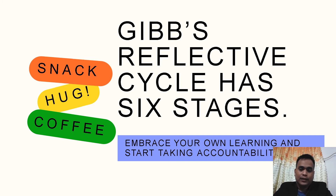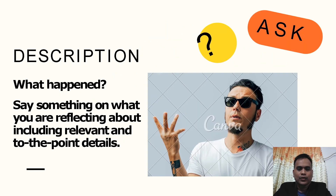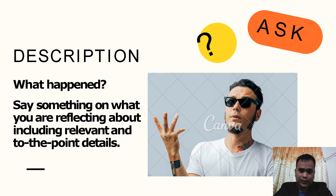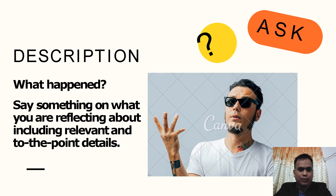You may take your coffee, snack, and review the activity that you have. The first stage is the description. In this first part of the reflection, you're going to say something about what you're reflecting on, including relevant and to-the-point details. You may answer the question: what happened in the activity? Write everything relevant and all the details that happened.